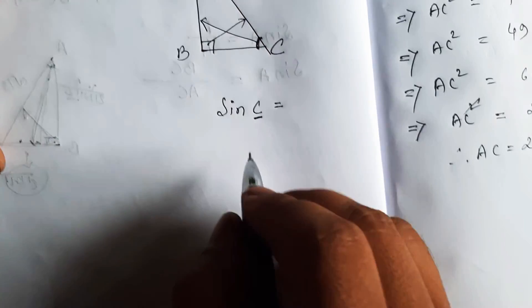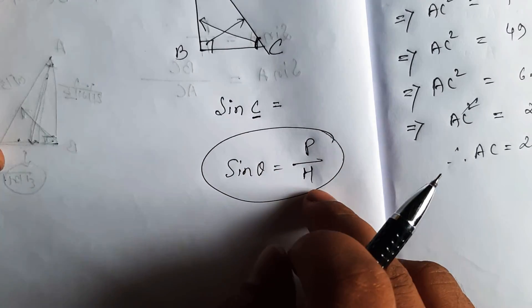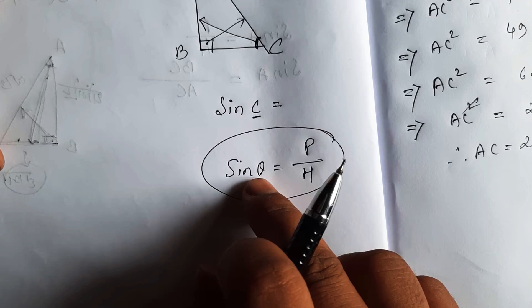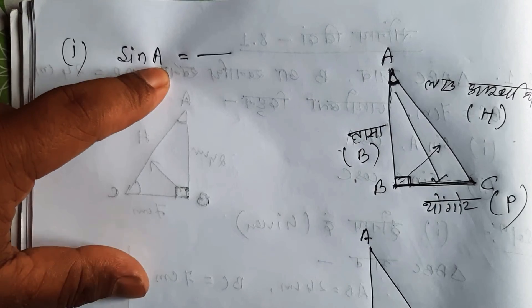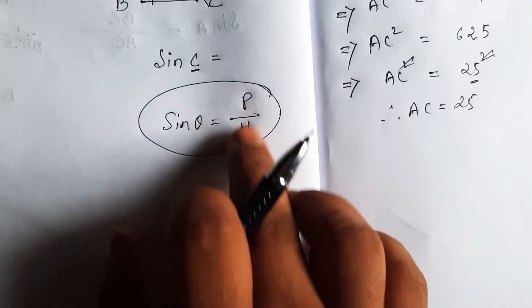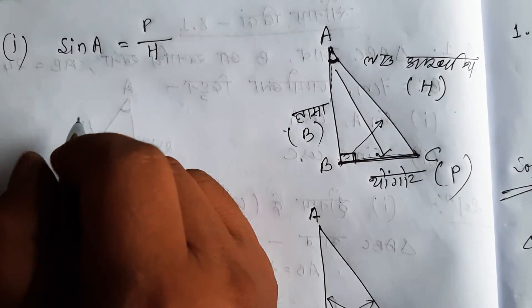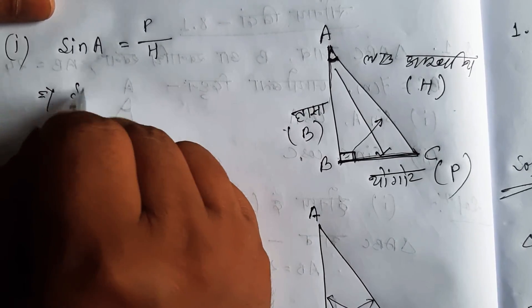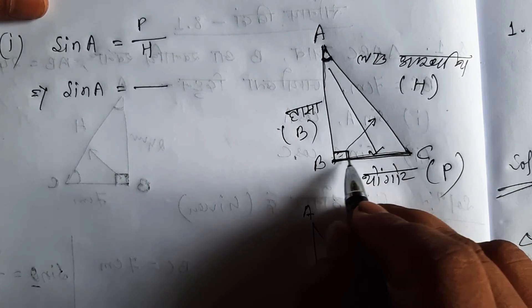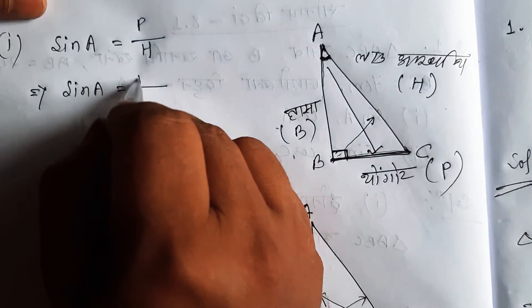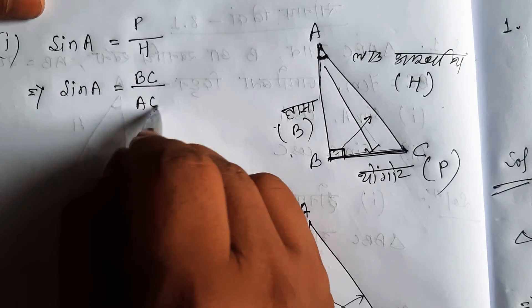The formula is: sin theta equals perpendicular by hypotenuse, that is p by h. So sin theta equals p by h.